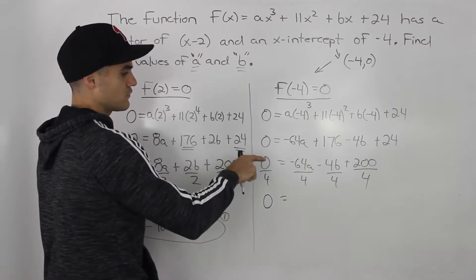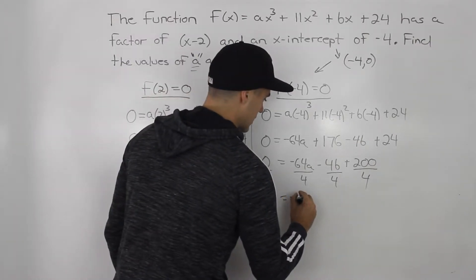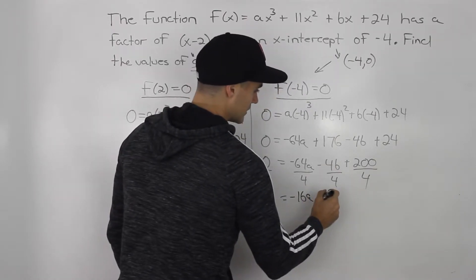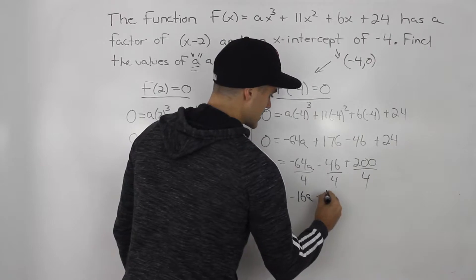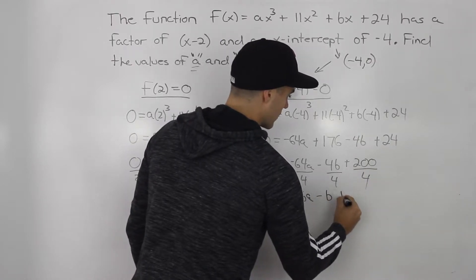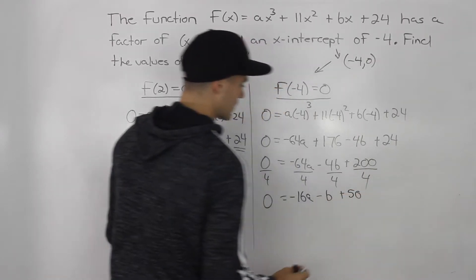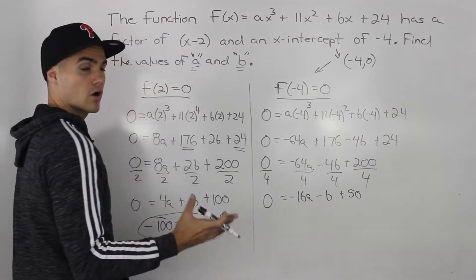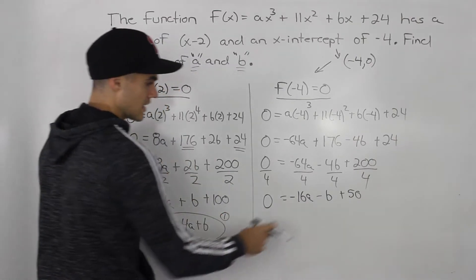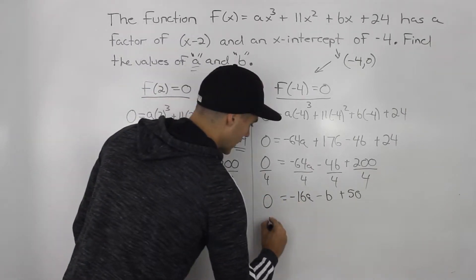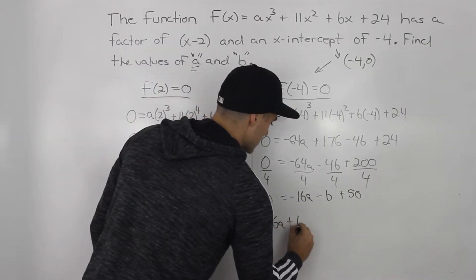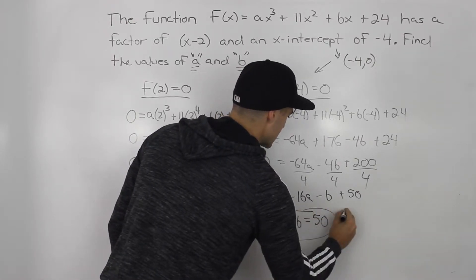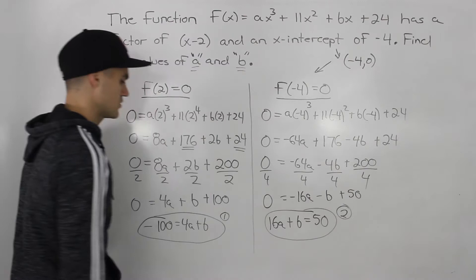So negative 64a divided by 4 gives us negative 16a. Negative 4b divided by 4 gives us just negative b. And then 200 divided by 4 is 50. And then like we did here, let's bring all of the variables over to one side. So bringing this negative 16a over and negative b over, we'd have positive 16a plus b equals 50. And this is equation 2.